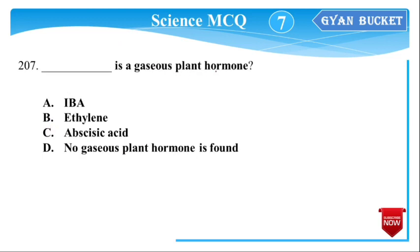Next question: Which is a gaseous plant hormone? Plants produce hormones, and ethylene is a gaseous plant hormone. Ethylene causes leaves to drop and is involved in fruit ripening.